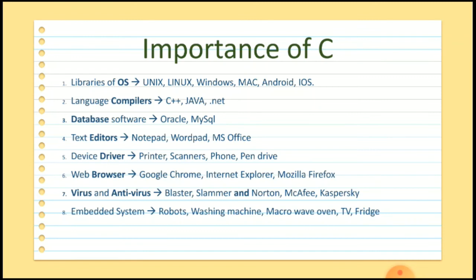Nowadays most of the electronic machines work when you give a command, and according to the given command, the machine will work. This system is also called an Embedded System. For example, if you are making a cake using a microwave oven, you give commands by setting the temperature and timing. Such operations are created using C language. Embedded systems such as robots, washing machines, microwave ovens, TVs, fridges, etc. are also created using C language.